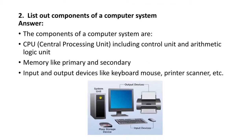Next question: list out the components of a computer system. The components of computer systems are: CPU, that is central processing unit, which includes control unit and arithmetic logic unit; then memory, like primary and secondary memory; then input and output devices, like keyboard, mouse, printer, scanner, etc.